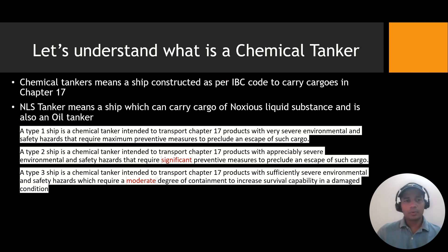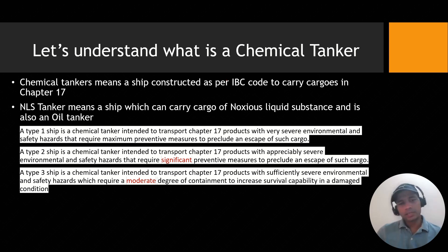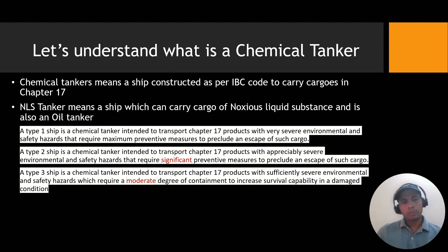Now let's understand what is a type 1, type 2 and type 3 tanker. In short, type 1 is a ship which is constructed with the maximum stringent construction, type 2 is a bit less, and type 3 is the most lenient of all. As per the definition, a type 1 chemical tanker is intended to transport Chapter 17 products with very severe environmental and safety hazards — mostly type X cargo, and sometimes type Y cargo — that require maximum preventive measures to preclude an escape of such cargo.